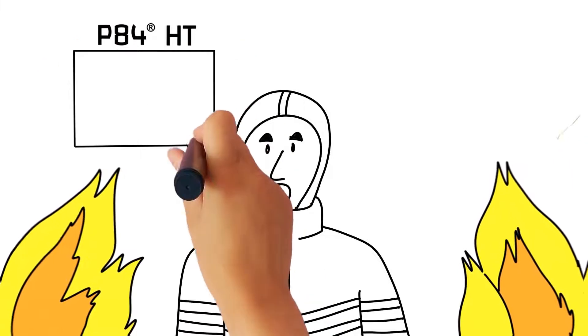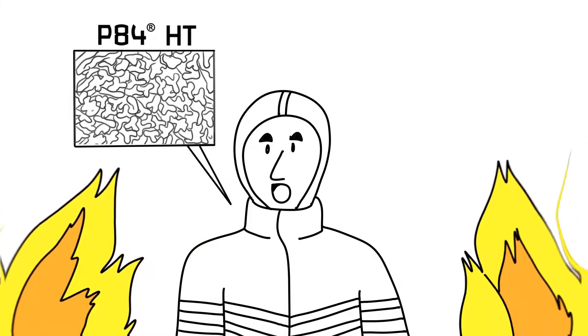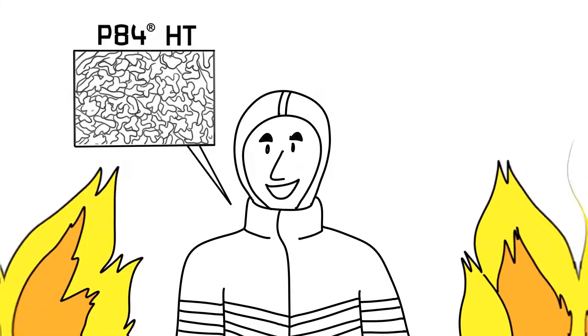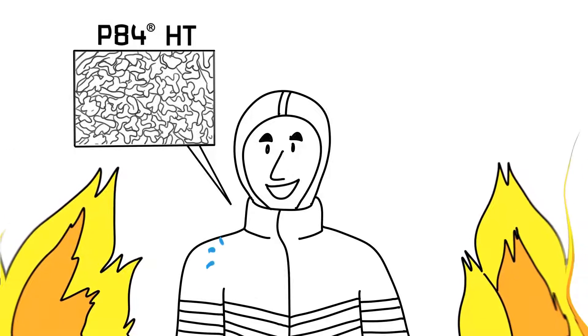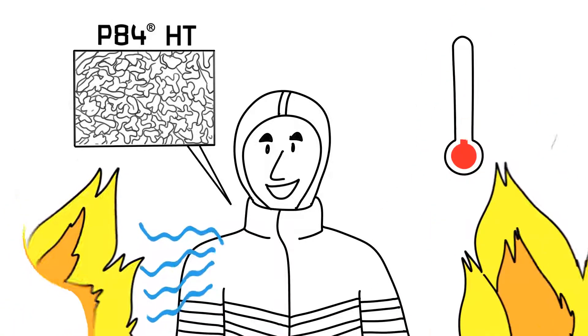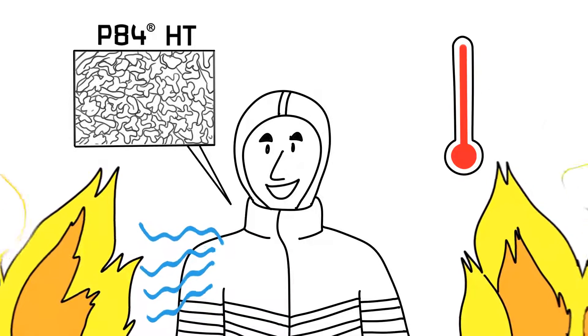The unique shape of P84-HT fibers found in protective hoods, liners, undergarments and outerwear has an amazing ability to allow skin to breathe while battling intense heat and the surrounding unpredictable environment.